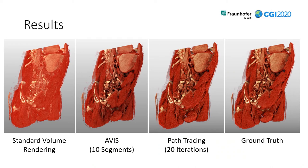Let's come to results. On the left you can see standard volume rendering without any lighting or shadowing. In the middle-left is the ARVIS rendering with 10 segments. In the middle-right is a path-tracing rendered image with 20 iterations. The rightmost image is the ground truth — a fully converged path tracer, specifically the Exposure Renderer, without temporal reprojection.